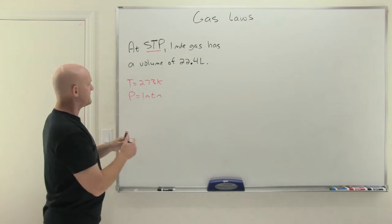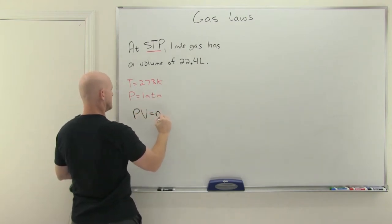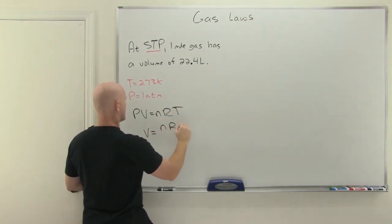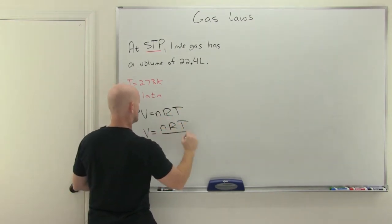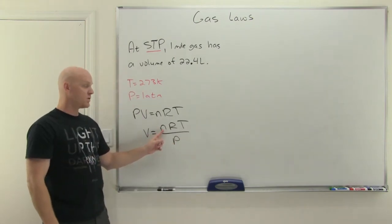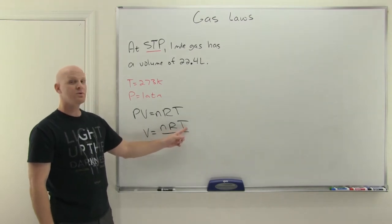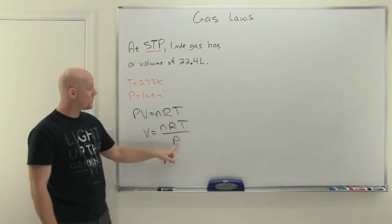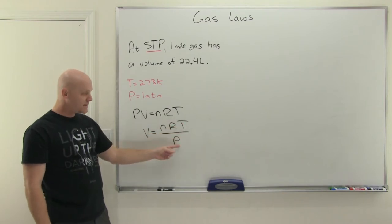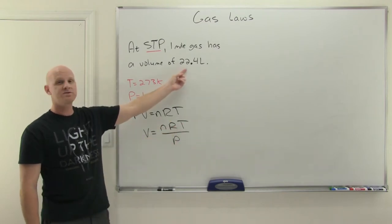We can derive this from the ideal gas law. If PV = nRT and we rearrange to V = nRT/P, then plugging in 1 for the number of moles of gas, 0.08206 for the gas constant, 273 for the temperature, and 1 atmosphere for the pressure, one mole of gas at STP comes out to have a volume of 22.4 liters.